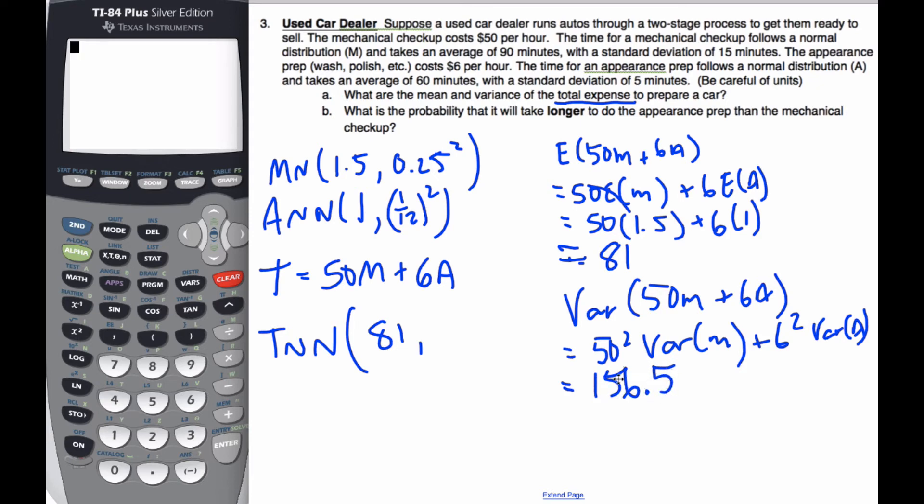And that is the variance. So I get 156.5. And so the total expense is normally distributed, an expected cost of 81, and the variance is 156.5. Now, part B says,